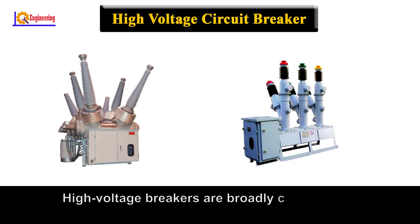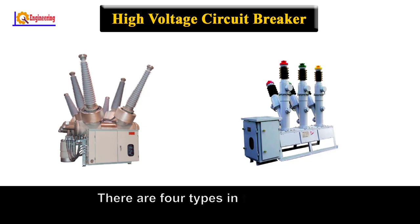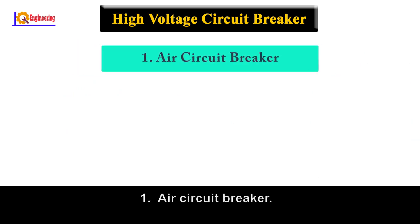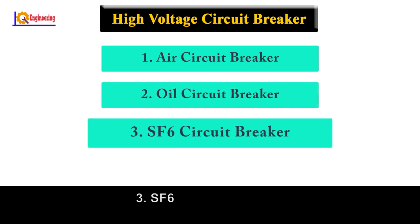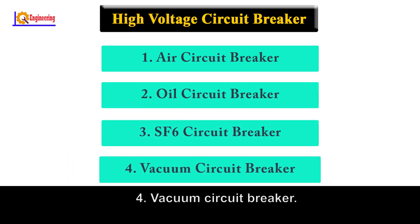High voltage breakers are broadly classified by the medium used to extinguish the arc. There are four types in this category: Number 1, Air circuit breaker. Number 2, Oil circuit breaker. Number 3, SF6 circuit breaker. And Number 4, Vacuum circuit breaker.